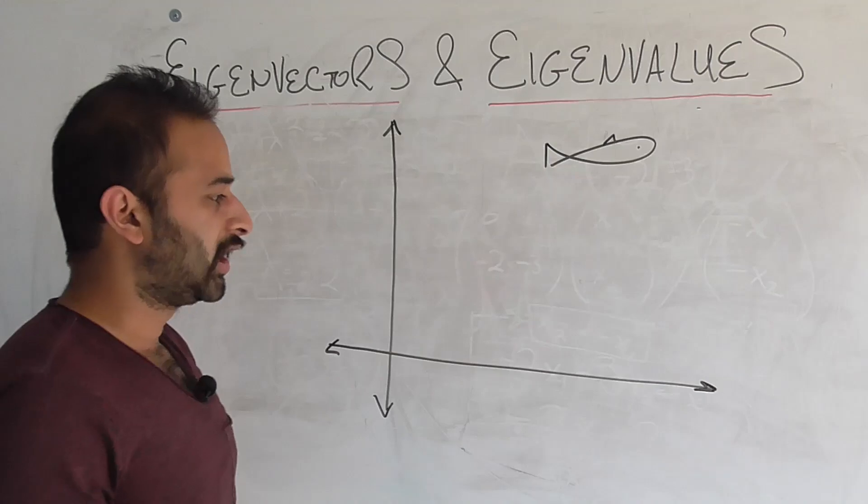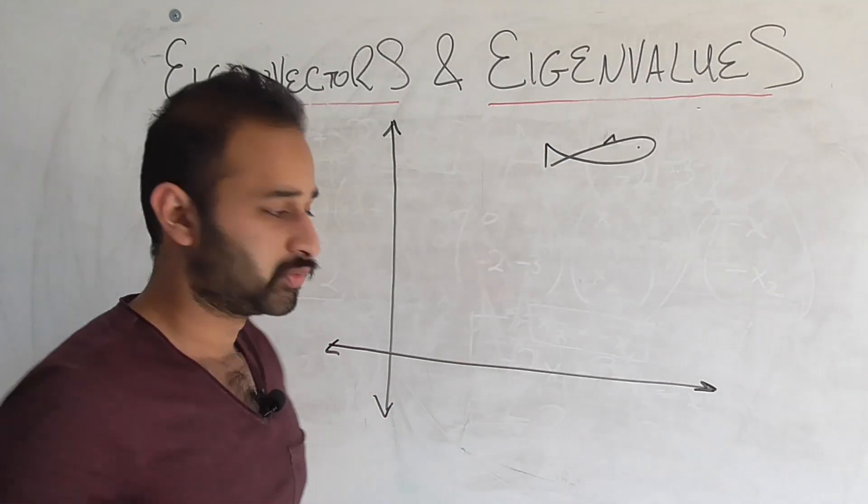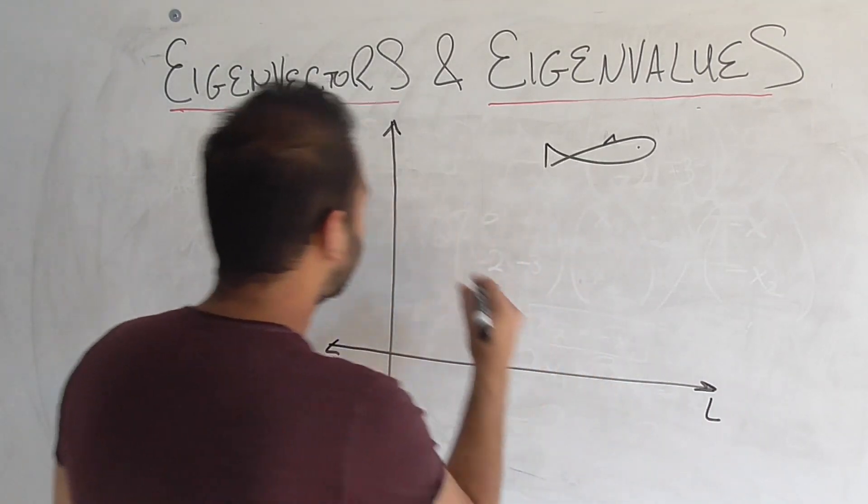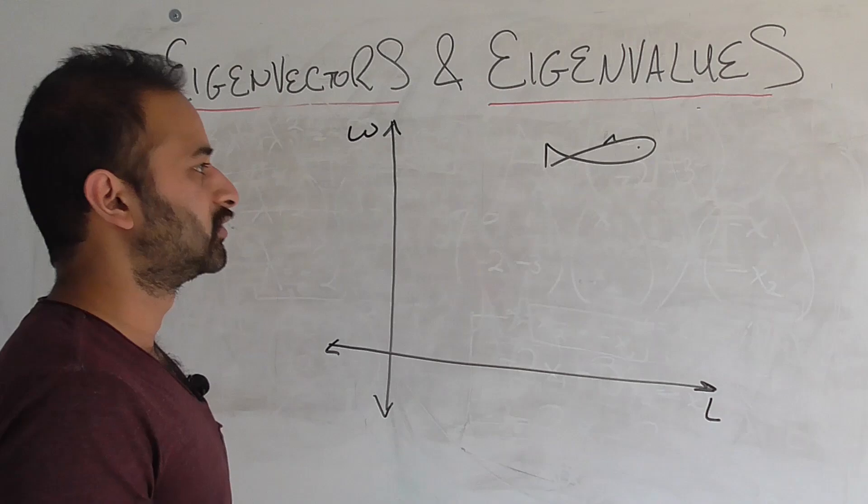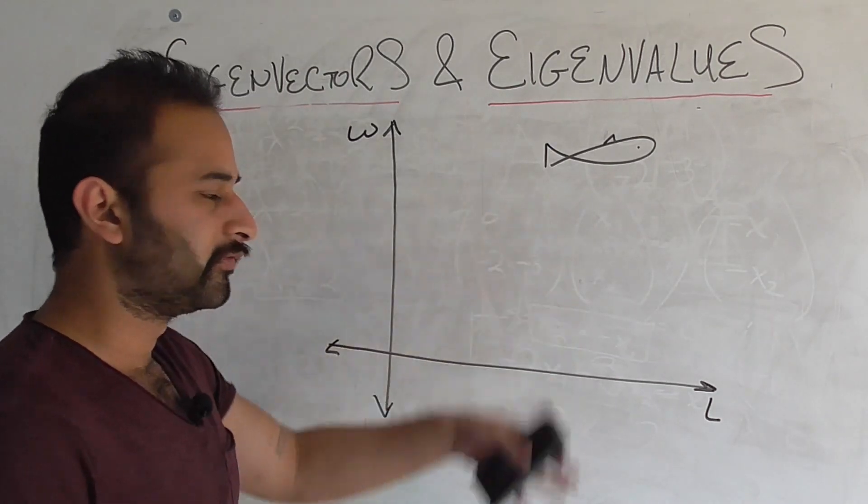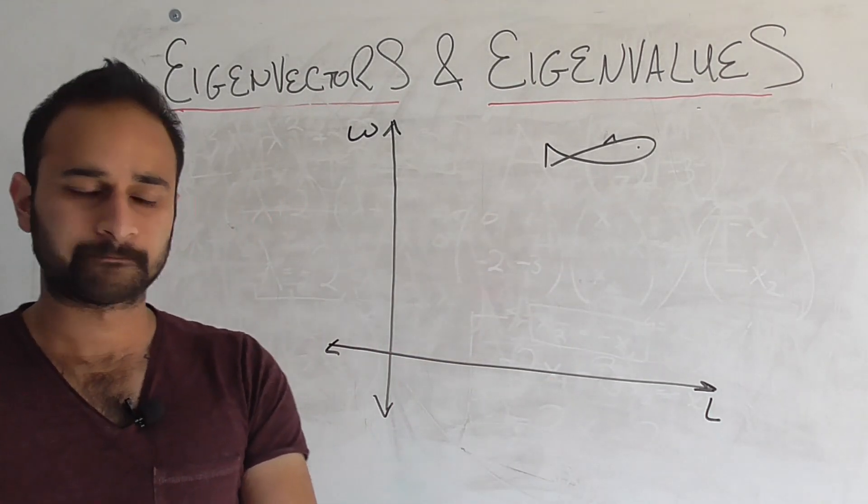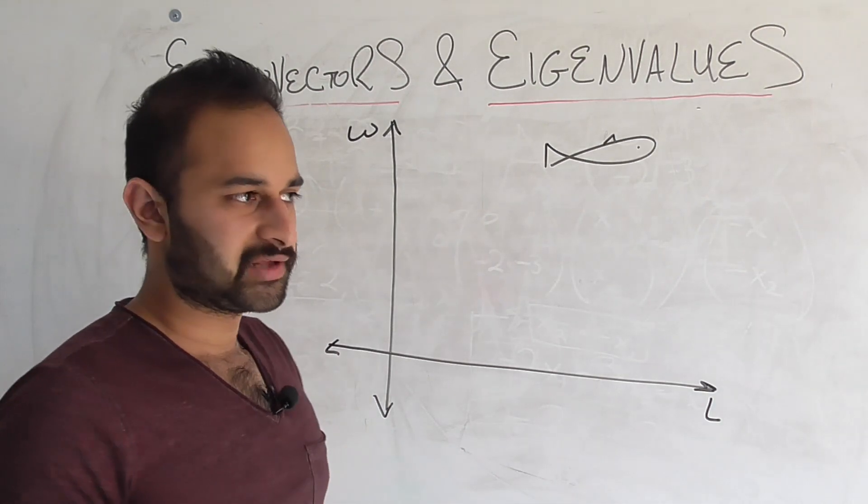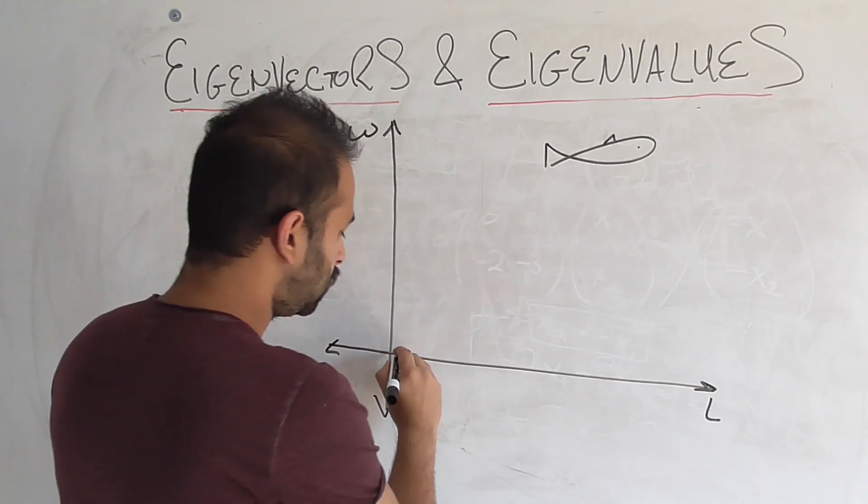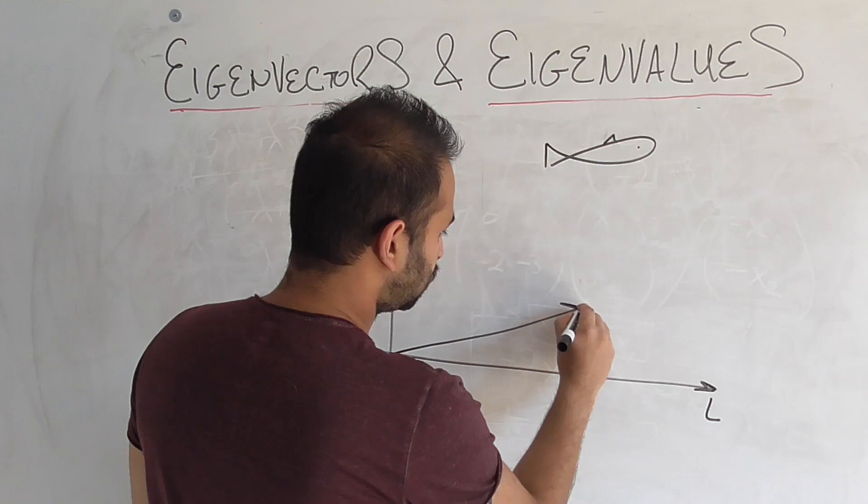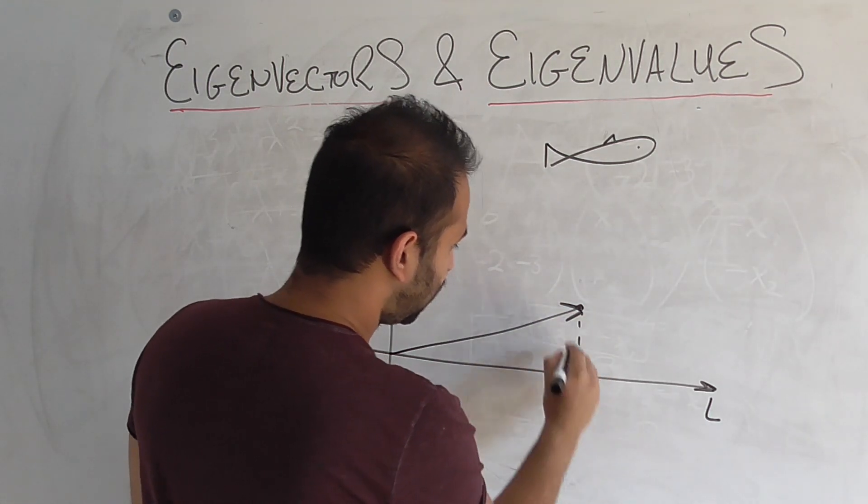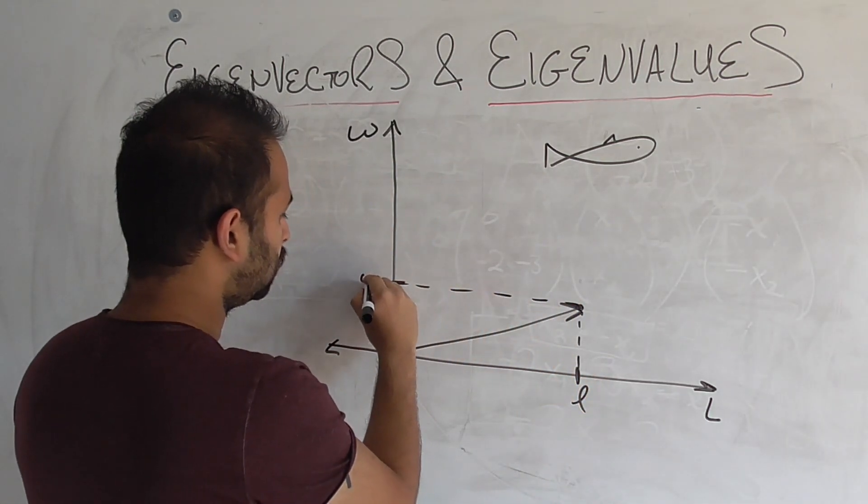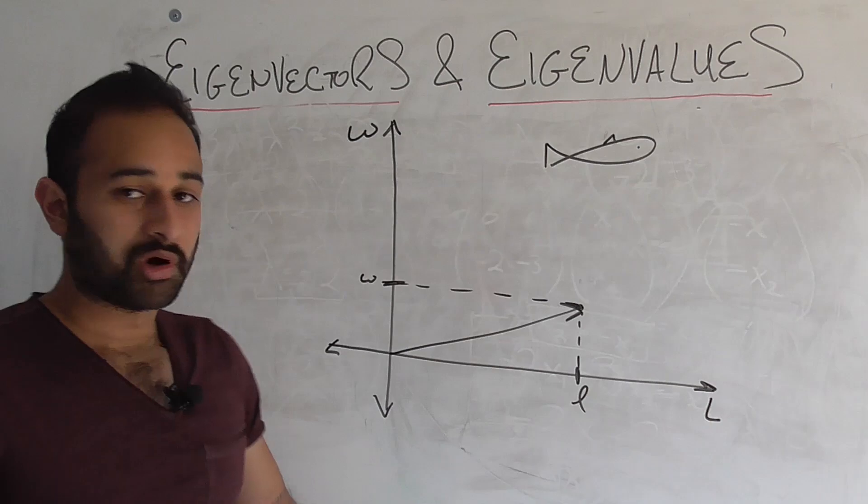Okay, so we are biologists studying fish and we only care about two attributes of the fish. We care about the fish's length and we care about the fish's weight. Okay, so length and weight, we measure them on this axis right here. Now, that means since we only have two dimensions, we can represent this fish as a vector. For example, here is a fish with length l, with weight w.